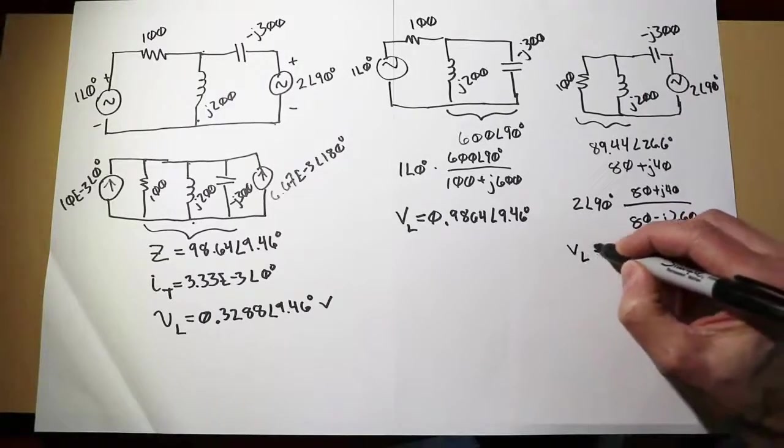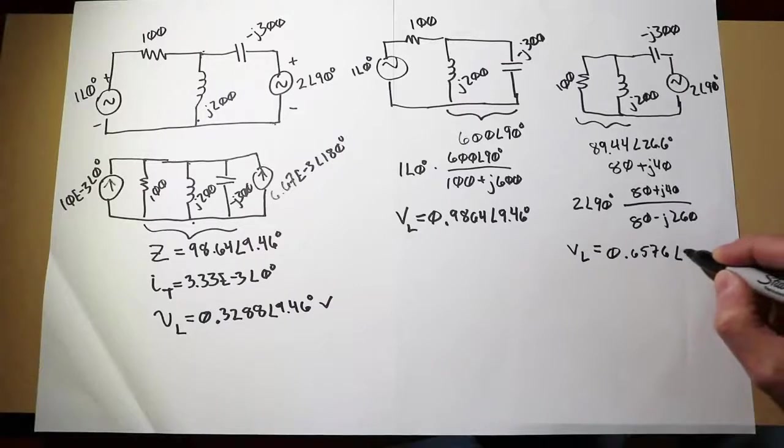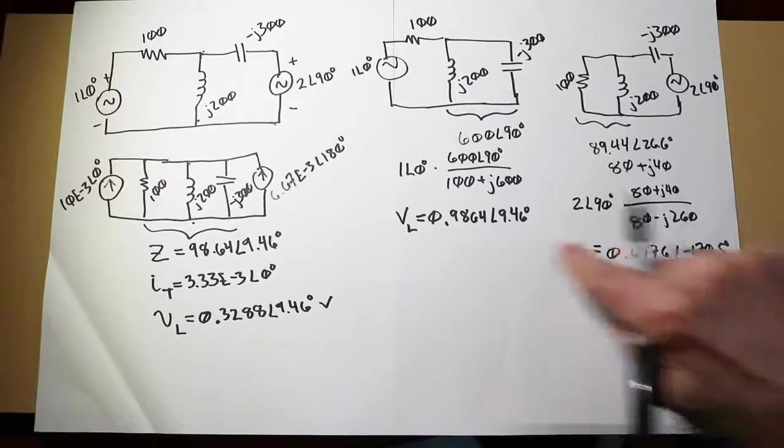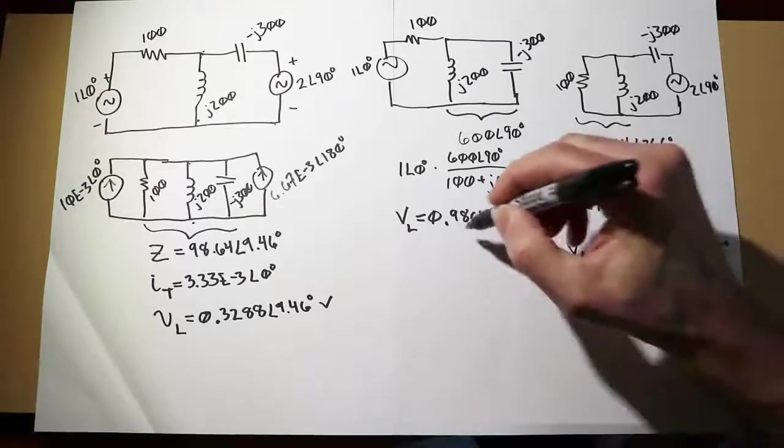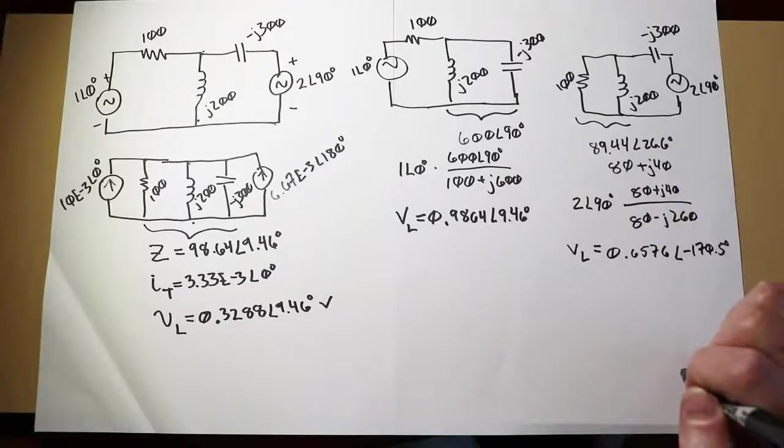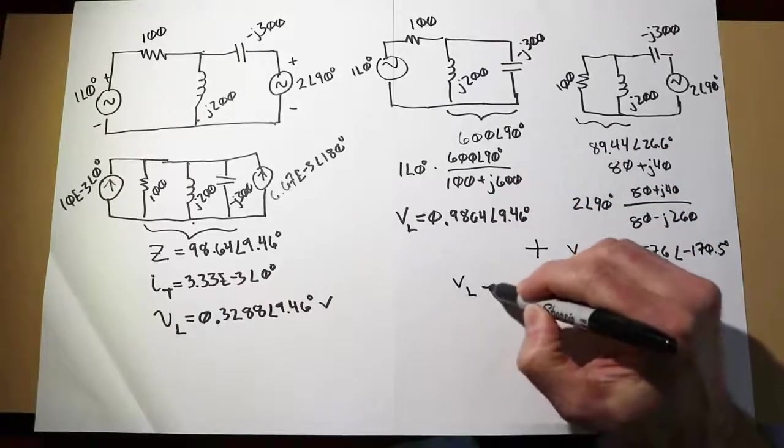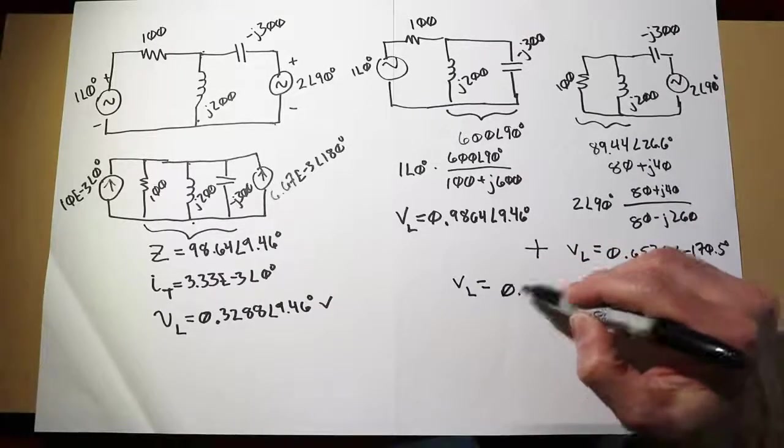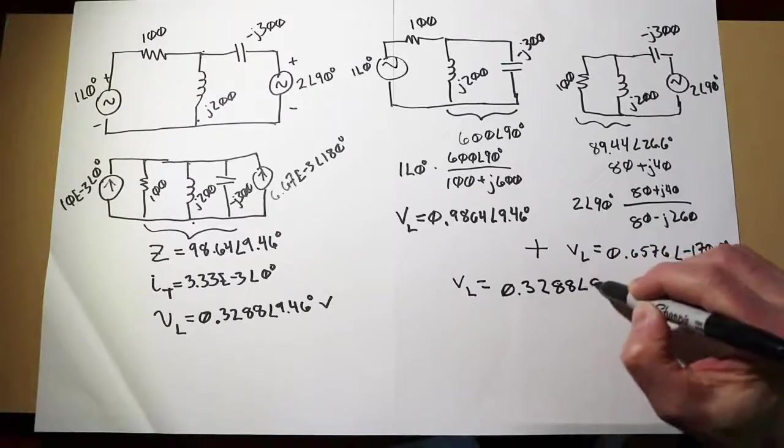That voltage works out to 0.6576 volts at an angle of minus 170.5 degrees. So this is nearly out of phase with this. When we combine these two things together, you just add these two, we end up with 0.3288 at an angle of 9.46 degrees, if we carry all the digits out.